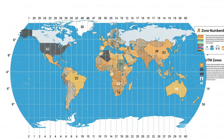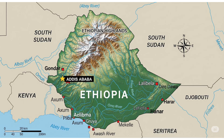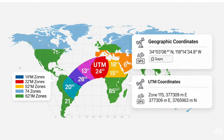Zone 36N covers eastern Africa, including parts of Ethiopia and Kenya. Each zone has a central meridian, and positions are measured in eastings and northings in meters from that central line. To avoid negative numbers, UTM adds a false easting of 500,000 meters to the central meridian.